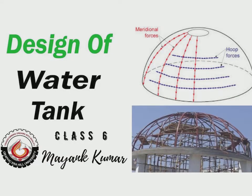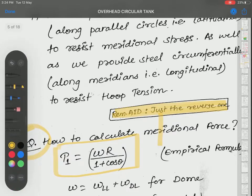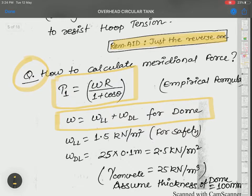How to calculate meridional force. Meridional force is represented by T1, and this formula is given in the codes. W is the distributed uniformly distributed load per unit length of the member, and R is the radius of the spherical structural element. W is the total load — total live load plus dead load — for the spherical dome.